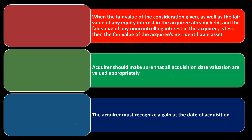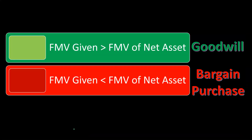The acquirer must recognize a gain at the date of acquisition. Thinking in terms of journal entries: you debit the net assets acquired and credit the consideration — say, cash. Since the net assets are less than the cash credited, you need an additional credit, which is the gain. This is the opposite of goodwill, where the net assets debited exceed the consideration, requiring an additional debit — which becomes the goodwill asset recorded on the books.